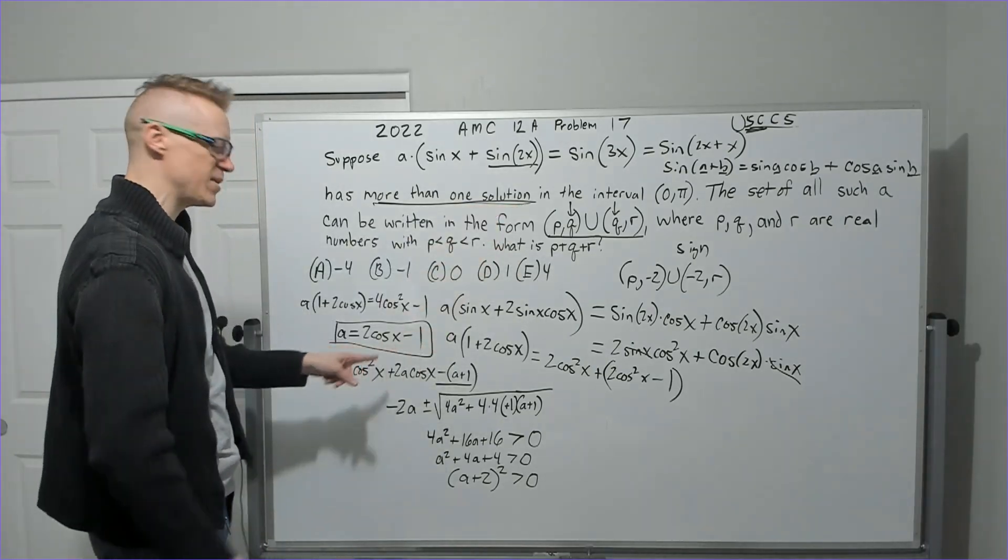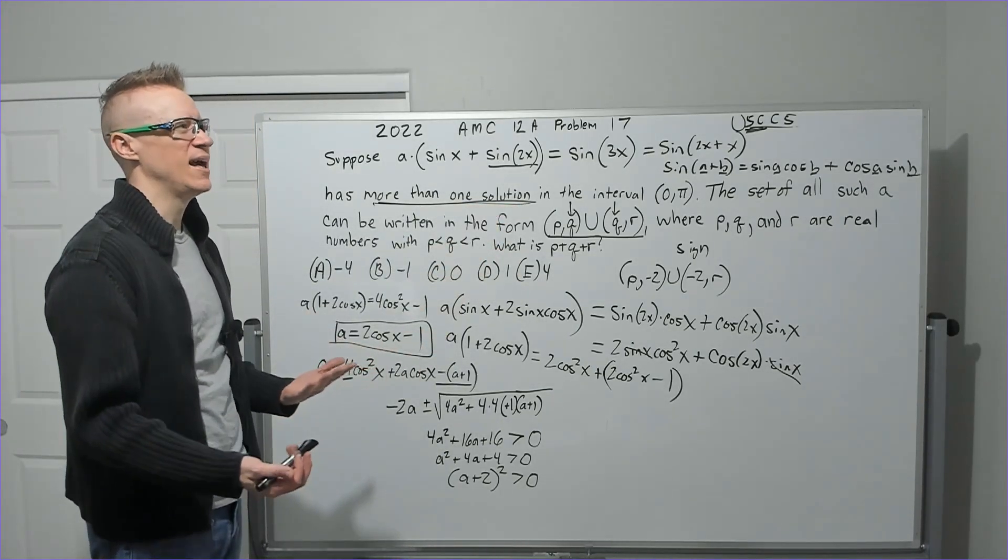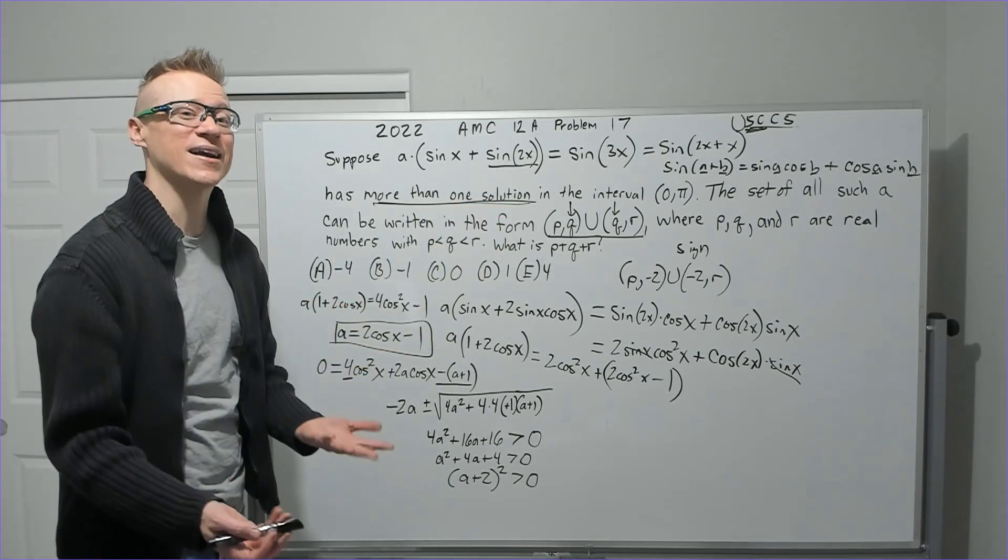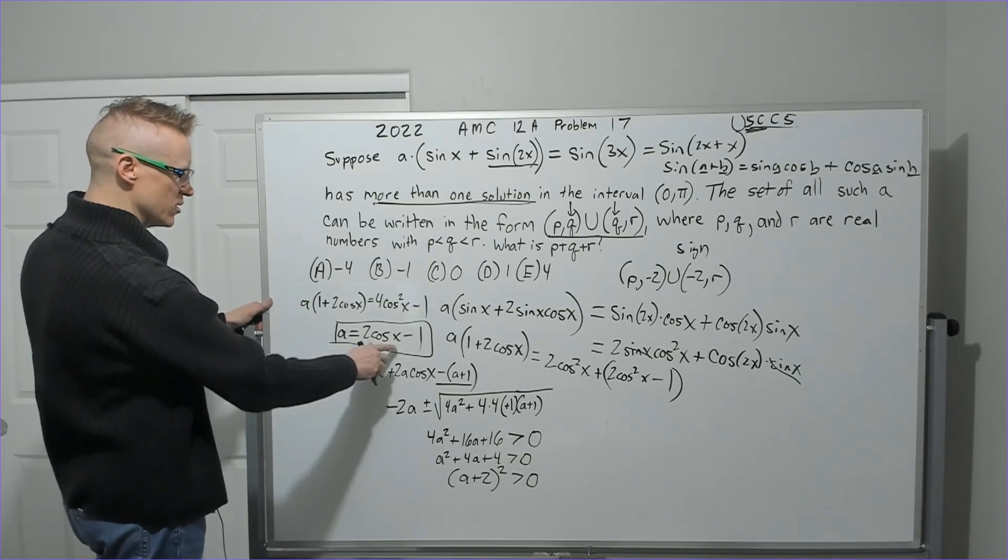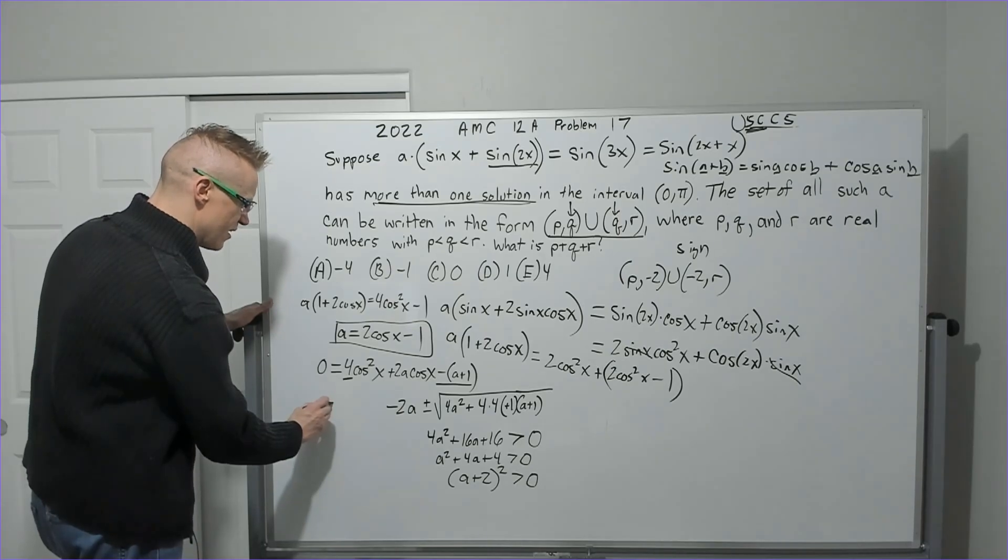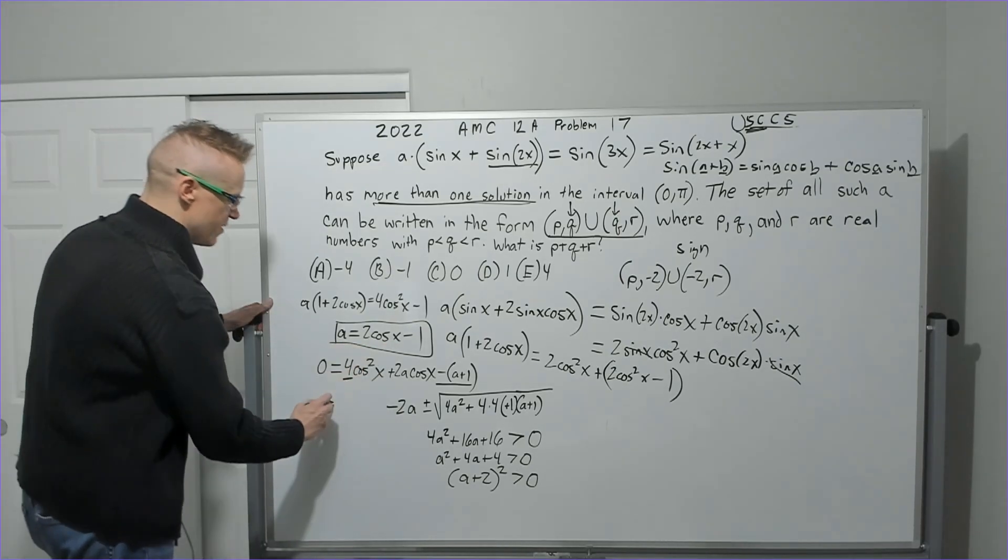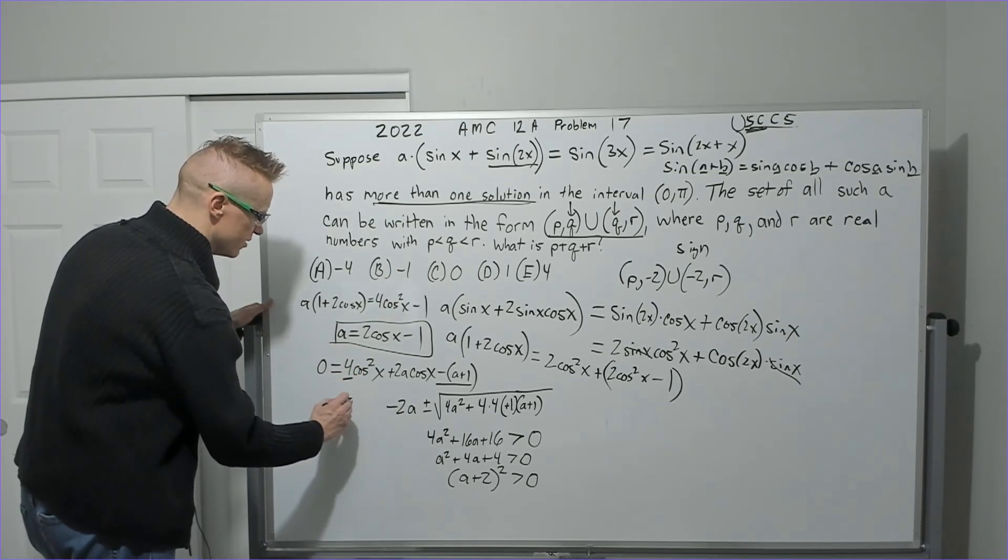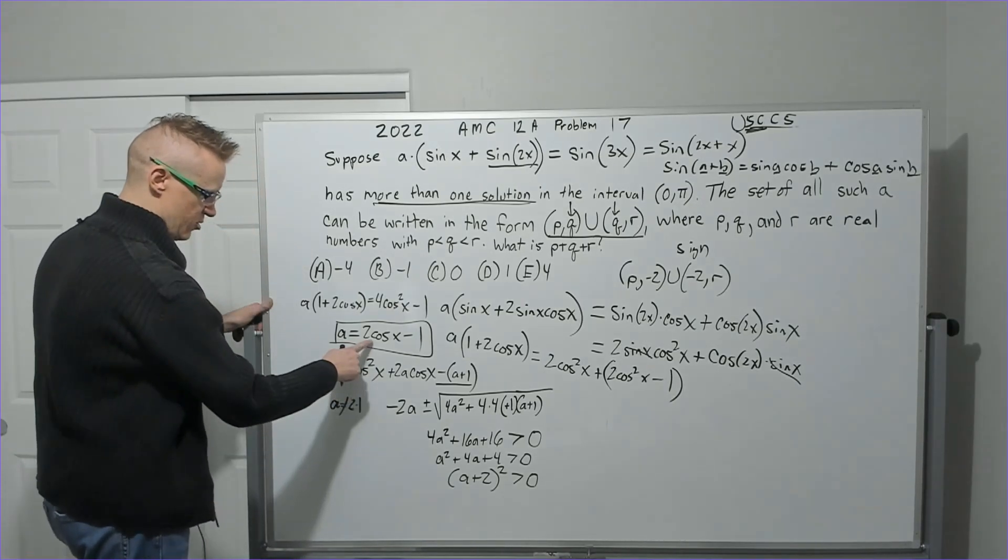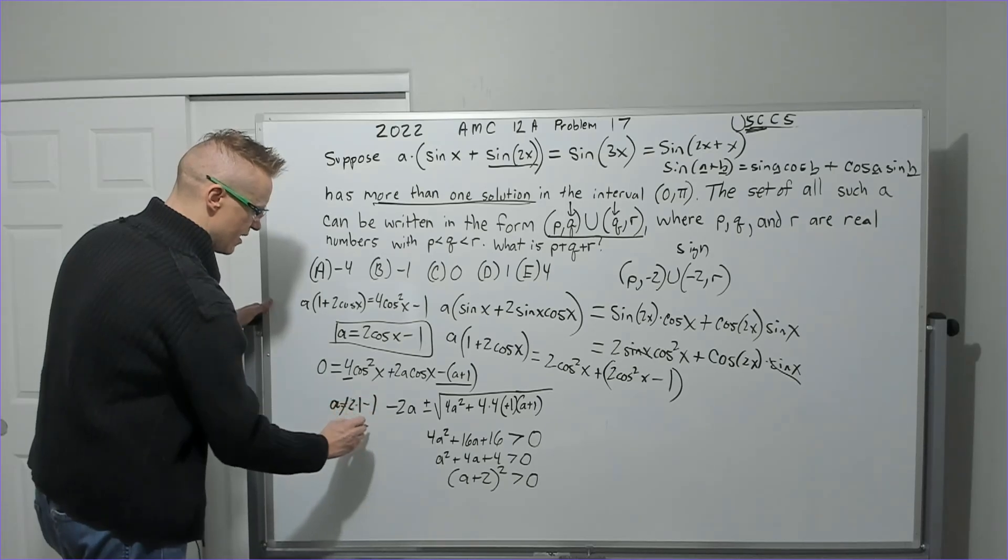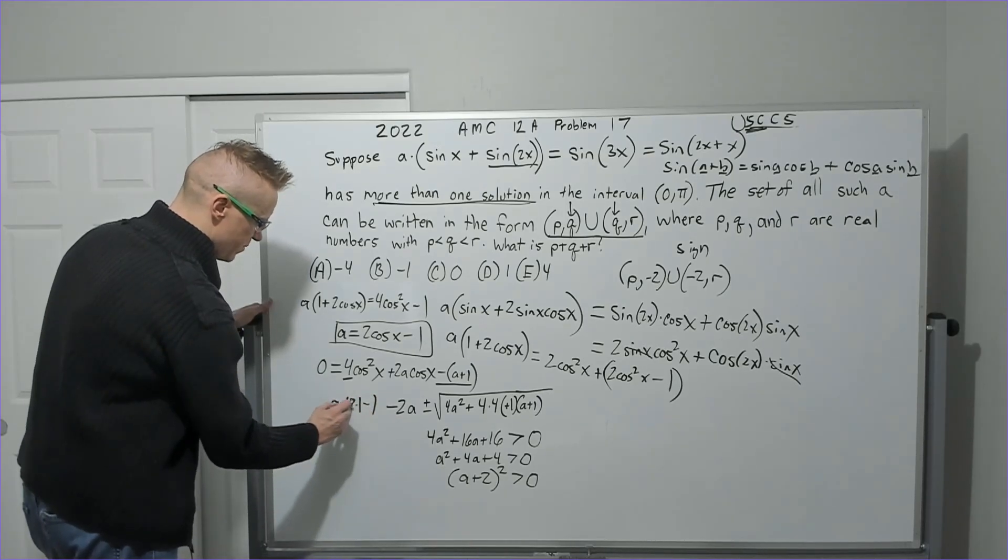oh, cosine cannot, x cannot be 0. What would cosine be when x is 0? It'd be its max value of 1. So in fact, if cosine cannot equal 0, then, or x cannot equal 0, then a cannot equal 2 times 1, 2 times 1 minus 1, which is going to be 2 minus 1. This is a dot. So a cannot equal 1.